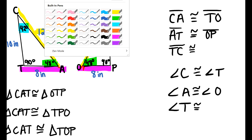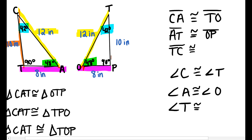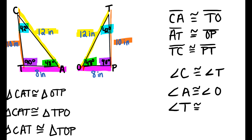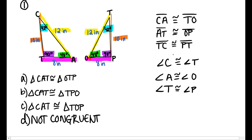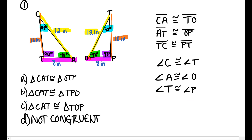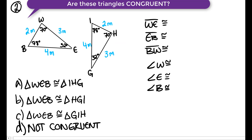Side TC is 10 inches and side PT is also 10 inches. Angle T is 90 degrees and angle P is 90 degrees, so angle T is congruent to angle P. If I started with T in the first triangle, I start with P in the second triangle. Looking at all of this, the correct congruence statement is: triangle CAT is congruent to triangle TOP — that would be option C.